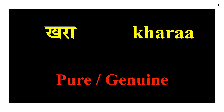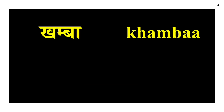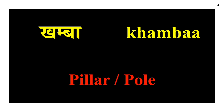Khara — it can either mean pure or genuine. It can be used to describe a person or a material, for example, a genuine person or pure gold. Kharal — mortar, as in mortar and pestle. Khamba — a pillar or a pole.